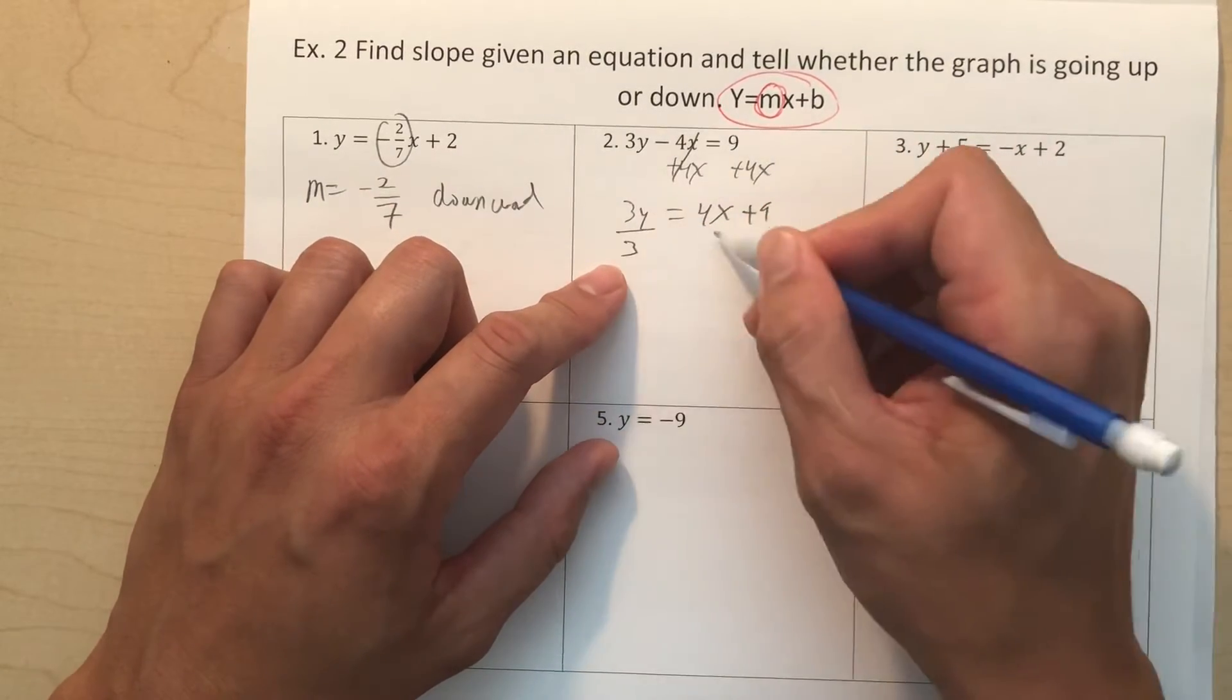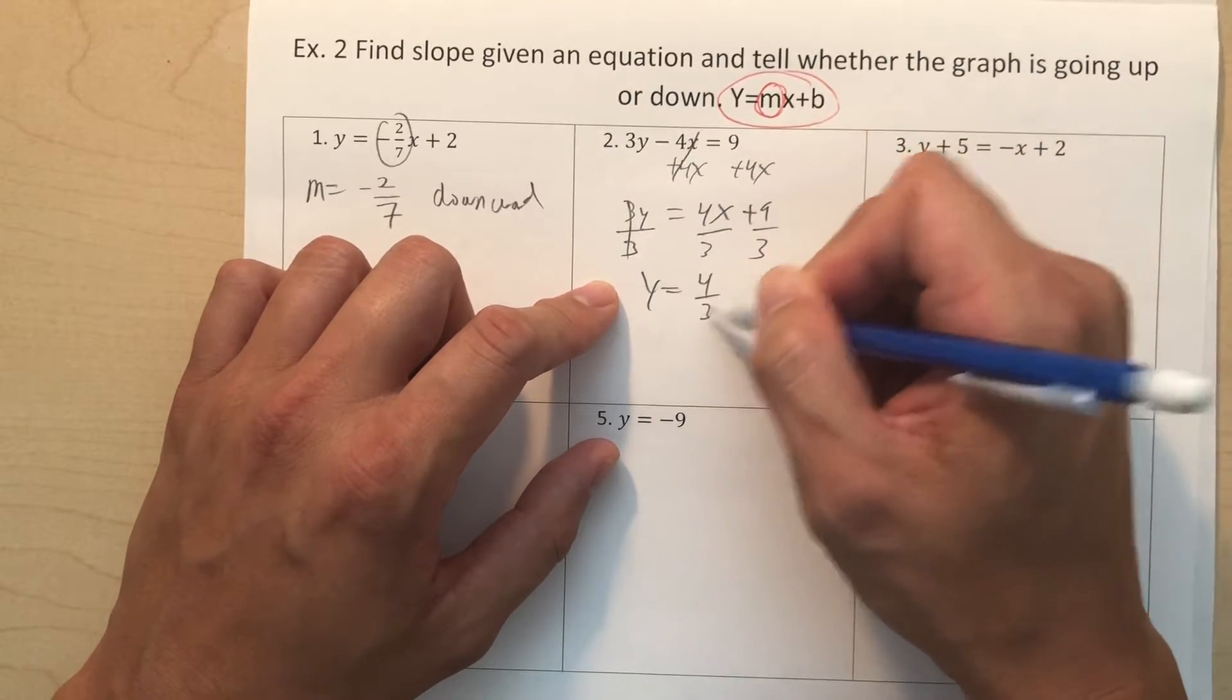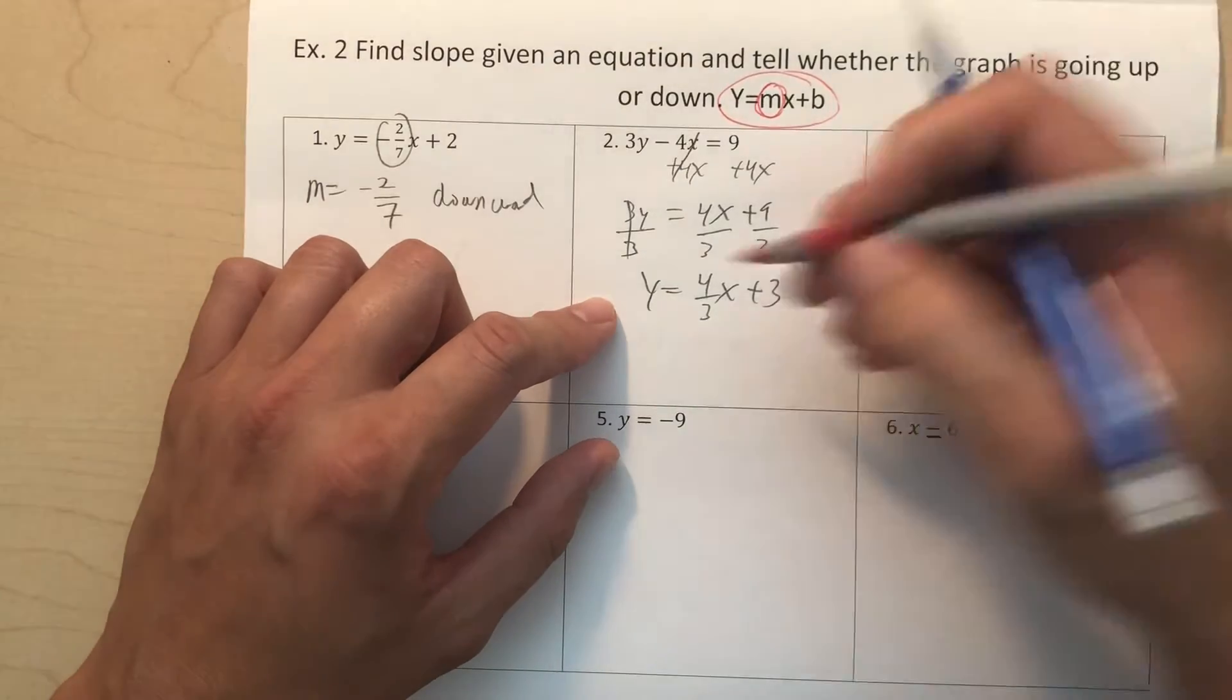Now, I'm gonna divide by 3, and make sure you divide everything by 3. So you can't divide that. That's okay, because that's your slope anyway. Plus 3, and there you go. That's your slope.